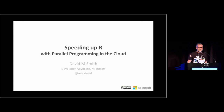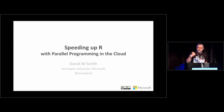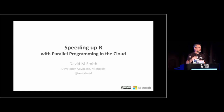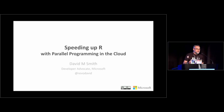I'm David Smith from Microsoft and today I'm going to talk about another way you can make your R programs run faster. Rather than using a faster interpreter or vectorizing your R code, I'm going to suggest you just throw a whole bunch of hardware at the problem — get a PC with lots of CPUs or a cluster of machines and run bits of your R code in parallel.